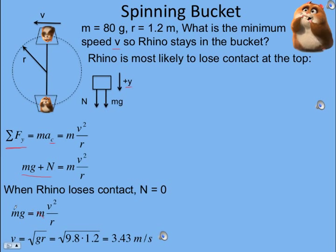We get mg equals m v squared over r. The mass divides out, so we didn't need the mass of Rhino. The linear speed is the square root of gr. g is 9.8, the radius is 1.2, so he needs to be going 3.43 meters per second.